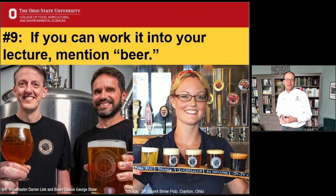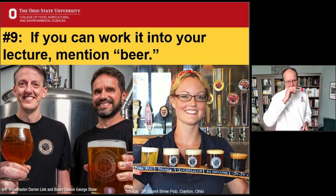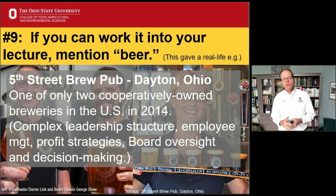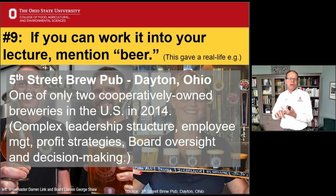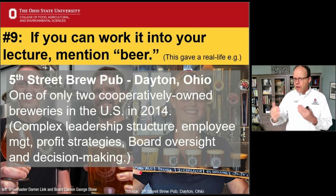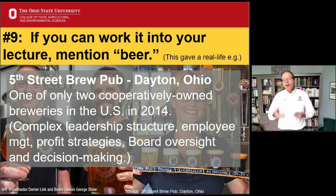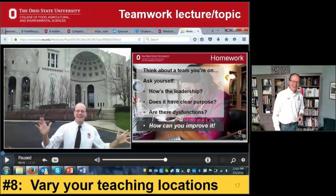Number nine: if you can work it into your lecture, mention beer. Back story quickly — this is the Fifth Street Brew Pub in Dayton. I worked with them for a couple of years facilitating some strategy and planning. They were one of only two cooperatively owned breweries in the U.S. back in 2014, with complex leadership structures, employee management, profit strategies, and board oversight decision making. This was from a management class lecture, and it got the students' attention.